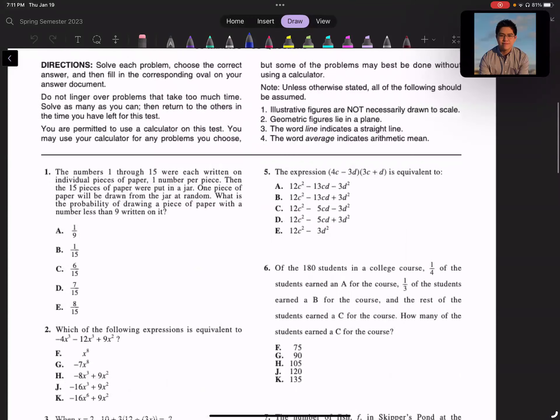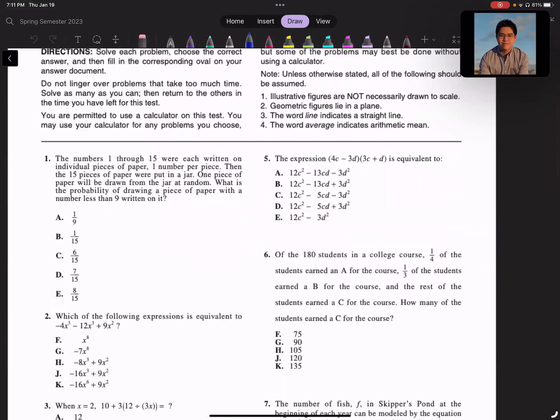So going through here, we'll do the first 10 questions. For number one, it says the numbers 1 through 15 were each written on individual pieces of paper, one number per piece. Then the 15 pieces were put in a jar. One piece of paper will be drawn from the jar at random. What is the probability of drawing a piece of paper with a number less than 9 written on it?